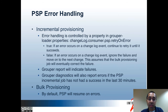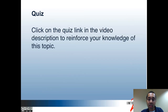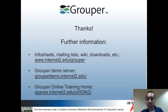Grouper Diagnostics can tell you sooner if there's a problem with incremental provisioning. By default, if the PSP ChangeLock consumer job hasn't had a success in the last 30 minutes, the Diagnostics page would return an HTTP 500 code. So if you have the Diagnostics page monitored by Nagios or some other monitoring tool, then you can have it notify you. With bulk provisioning, with the default error handling, the PSP will resume if there are errors in particular updates. That's all for this tutorial. You can click on the quiz link in the video description to reinforce your knowledge of the PSP. Here are some links you can visit with more information. Thanks.